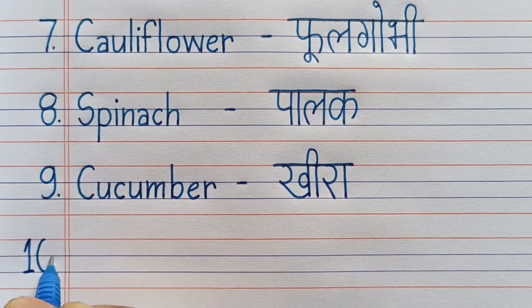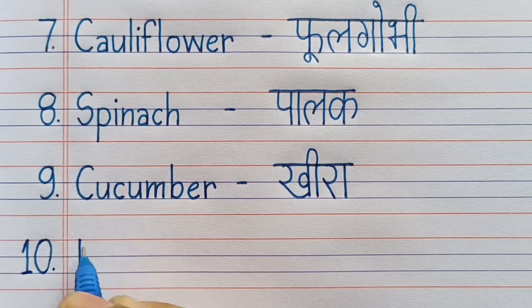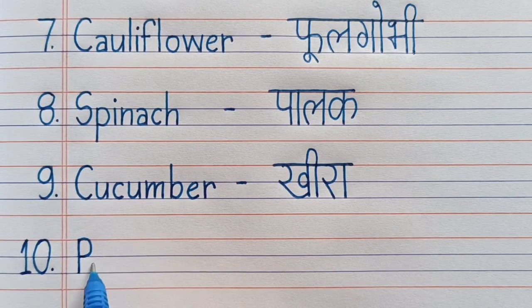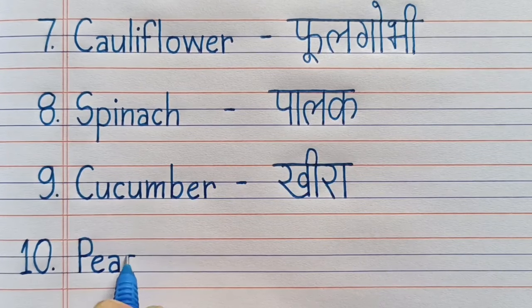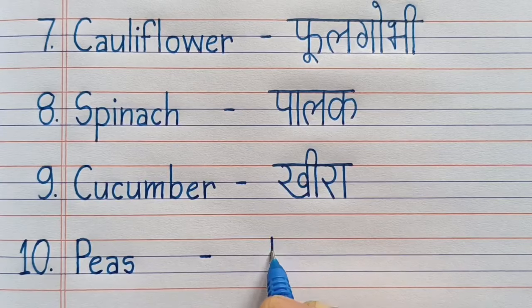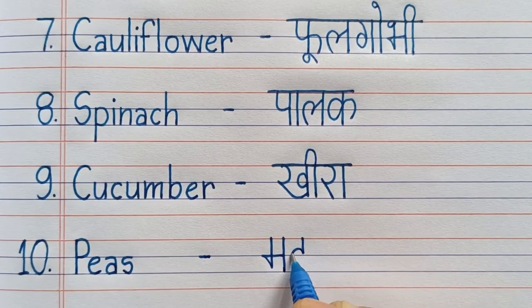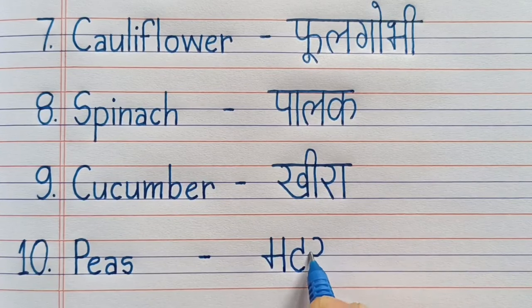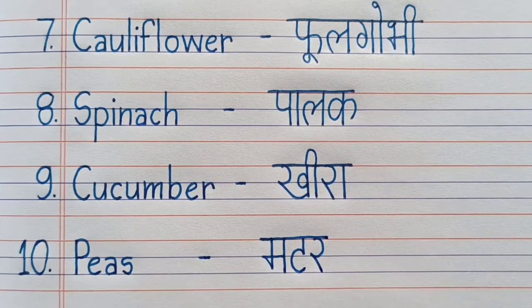Tenth number, Peas. P-E-A-S, Peas. Peas means Matar.